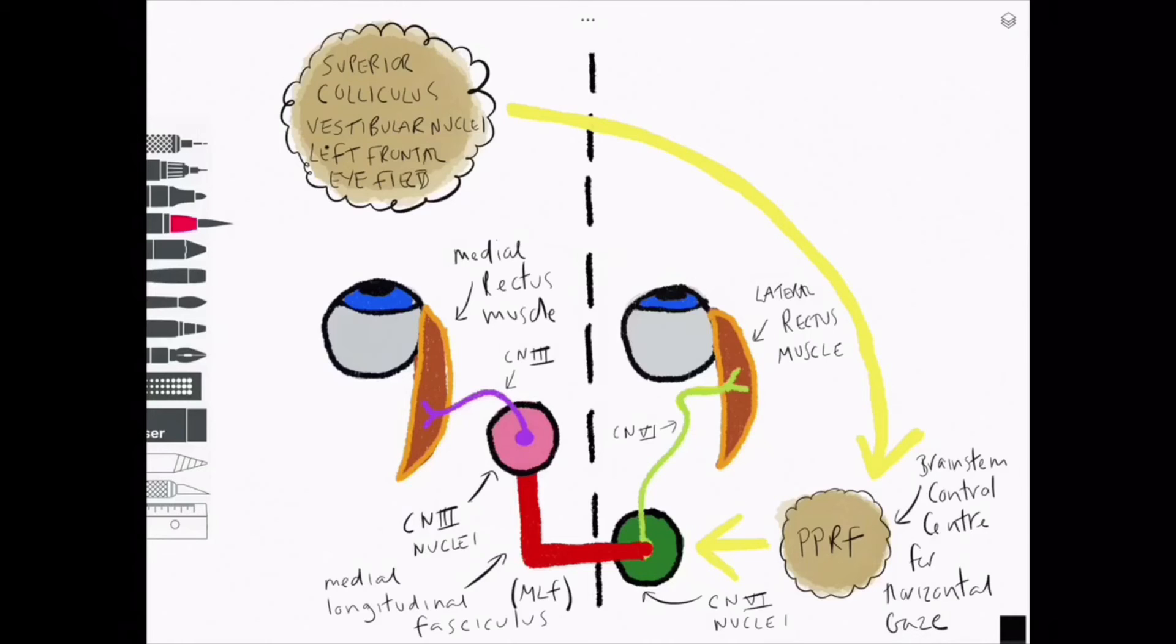Therefore we can surmise that the medial longitudinal fasciculus, or MLF, is a set of neuronal fibres responsible for horizontal conjugate gaze, that is, both eyes looking in the same direction at the same time.